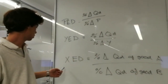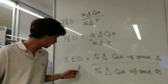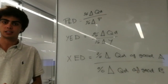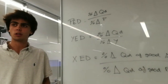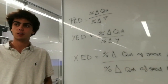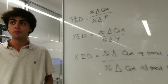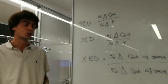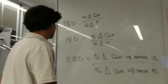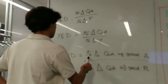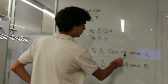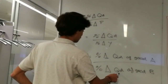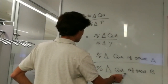The cross elasticity of demand measures the sensitivity of the quantity demanded of good A to a change in price of good B. The formula used is the percentage of the variation of the quantity demanded of good A divided by the percentage of the variation of the quantity demanded of good B.